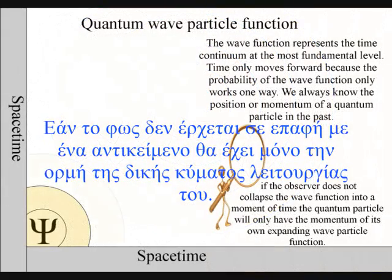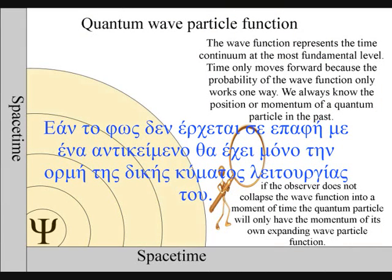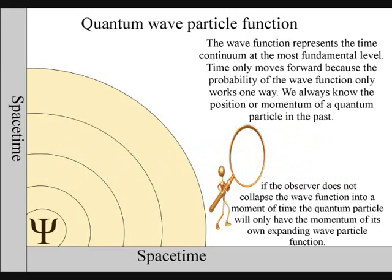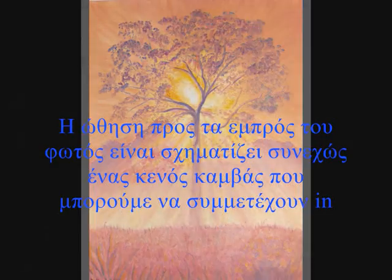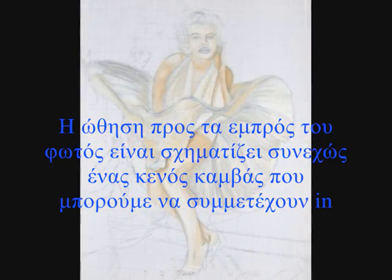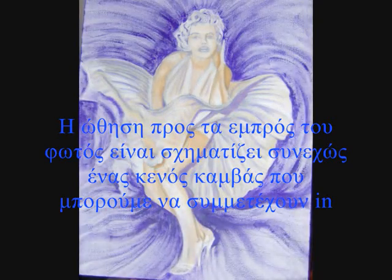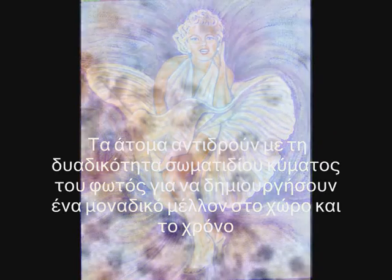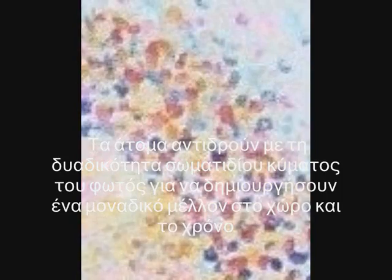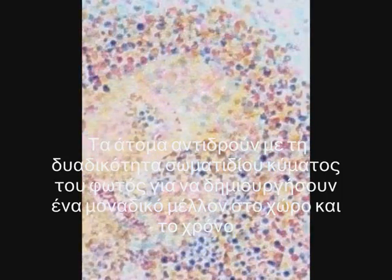If the light does not come in contact with an object, it will only have the momentum of its own wave function. The forward momentum of light is continuously creating a blank canvas for the observer that she or he can participate in. The atoms of the observer bond together and then collapse the wave function in unison, forming their own unique future position or reference frame in space and time.